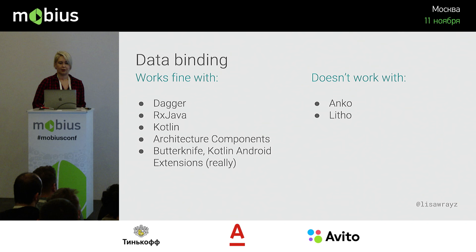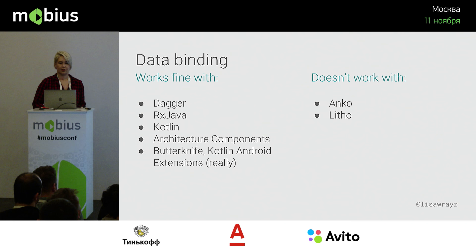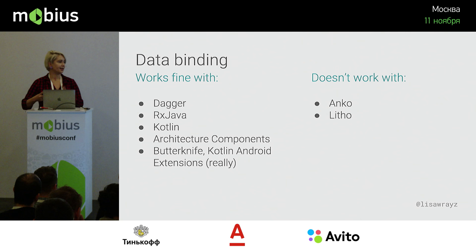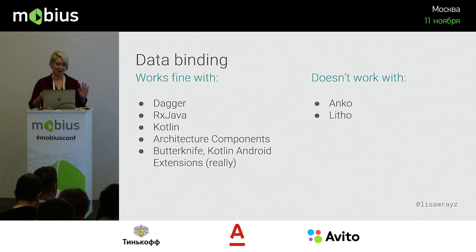Data binding works very well with other frameworks. I often get asked: does it work with Dagger 2? Does it work with RxJava? Obviously it works with Kotlin — otherwise this would be a short talk. It works with architecture components, and you can even use it with other view stub generators like Butterknife or Kotlin Android extensions. It does not work with frameworks that replace the Android XML layout, like Anko or Litho, and it doesn't work if you write all your views purely in Java code.